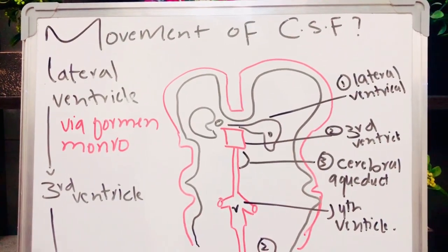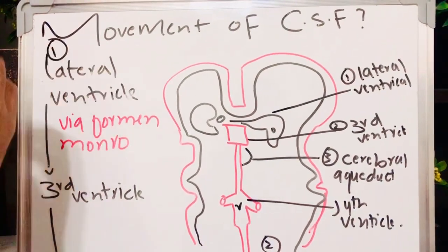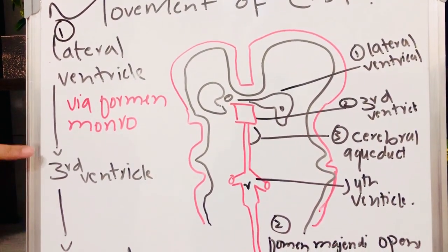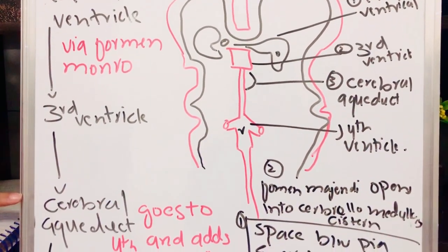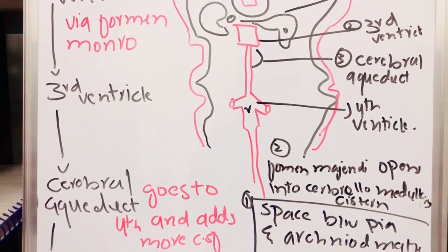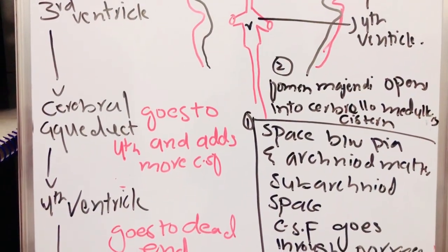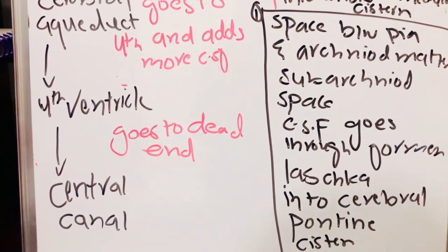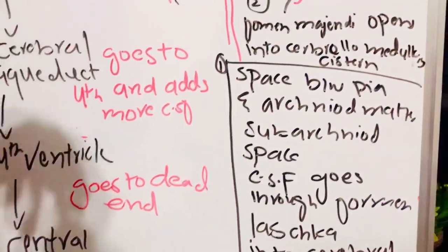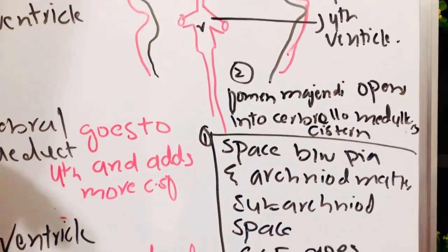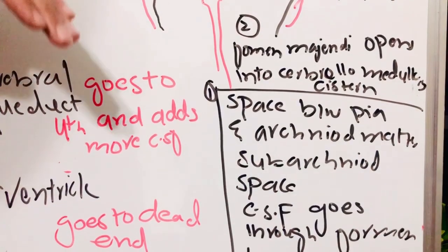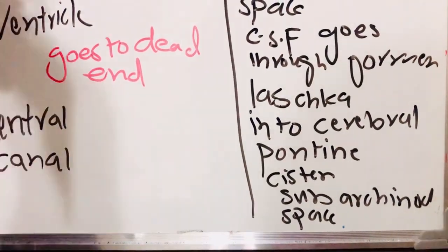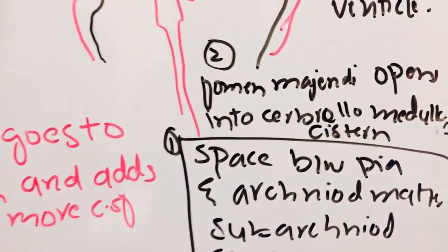Now we will discuss the movement of cerebrospinal fluid. There are basically three to four steps. First, CSF is in the lateral ventricle; from the lateral ventricle it goes to the third ventricle via the foramen of Monro. After the third ventricle it goes to the cerebral aqueduct, from which it goes to the fourth ventricle. More CSF is added at the fourth ventricle, and from there some part goes to the central canal and other parts go to the lateral spaces — the subarachnoid space between pia mater and arachnoid mater. CSF goes through the foramen of Luschka into the cerebellopontine system and also through the foramen of Magendie into the cerebromedullary system.